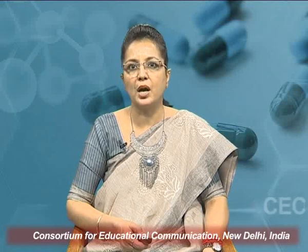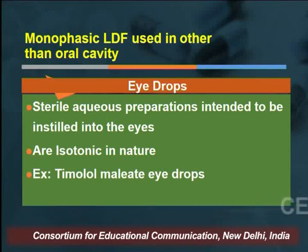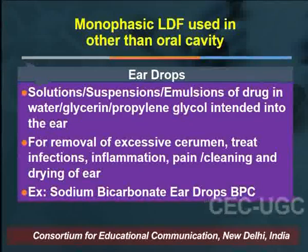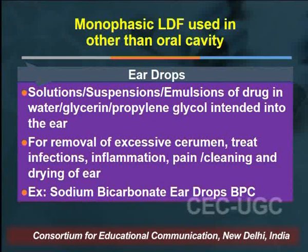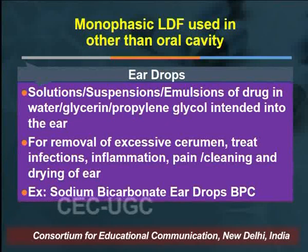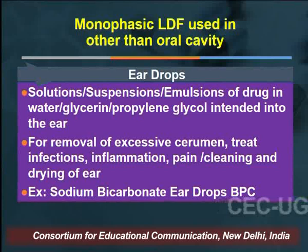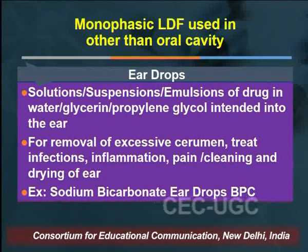The next type includes eye drops — sterile aqueous preparations intended to be instilled into the eyes, generally isotonic in nature. Example: timolol maleate eye drops. Following that are ear drops — solutions, suspensions, or emulsions of a drug in water, glycerin, or propylene glycol intended for instillation into the ear. They are meant for removal of excessive cerumen, treating infections, inflammation, or pain, and helping in cleaning and drying of the ear. Example: sodium bicarbonate ear drops, official in the British Pharmaceutical Codex.